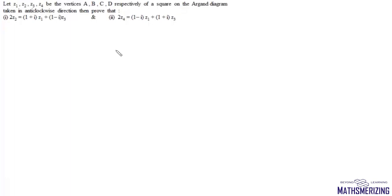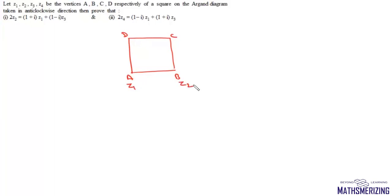Next question: let z1, z2, z3, z4 be vertices A, B, C, D of a square on the Argand diagram taken in anti-clockwise direction. The first part asks us to prove that 2z2 equals 1 plus iota times z1 plus 1 minus iota times z3.